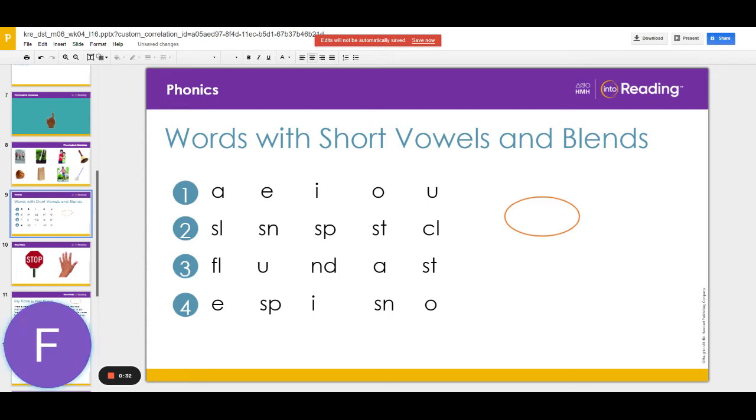Now I'll name a blend in line two and you say its sounds. For example, for S-L you would say S-L. Are you ready? Okay. S-L, S-N, S-P, S-T, C-L.